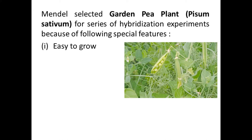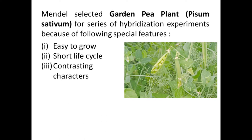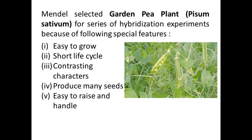The pea plant has a short life cycle, so results are visible quickly without a long wait. It also has contrasting characters — for each character there are two alleles existing as a pair. It produces many seeds, so there is no wastage problem. It is easy to raise and handle. Another important feature is that it allows artificial cross fertilization.